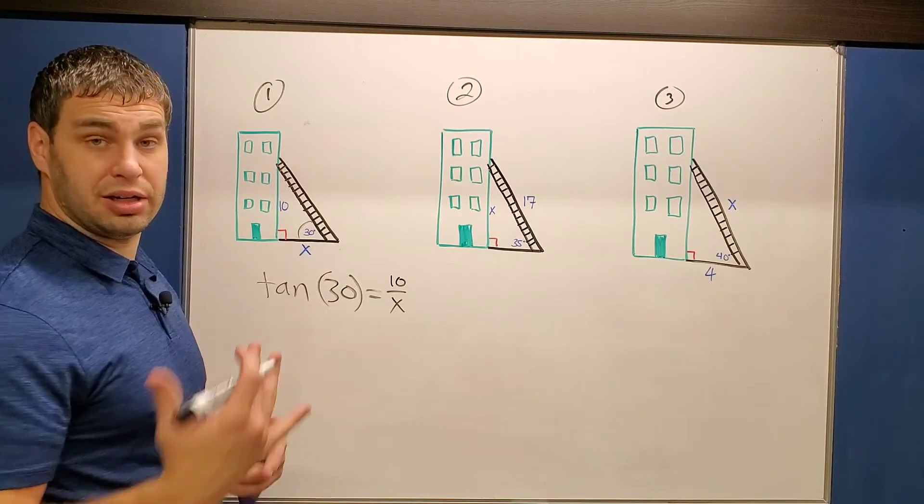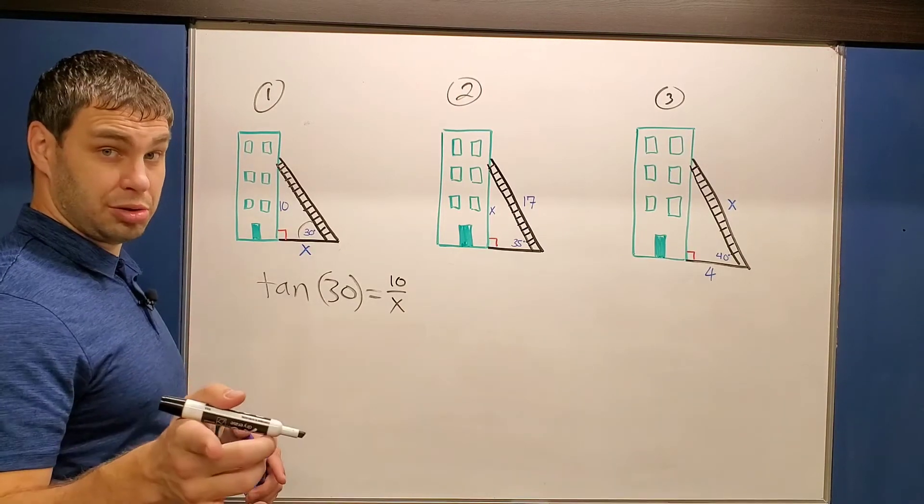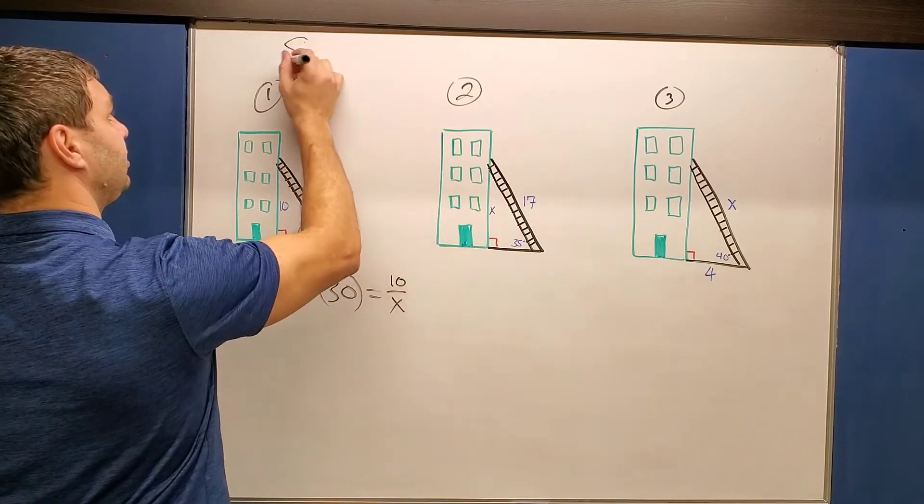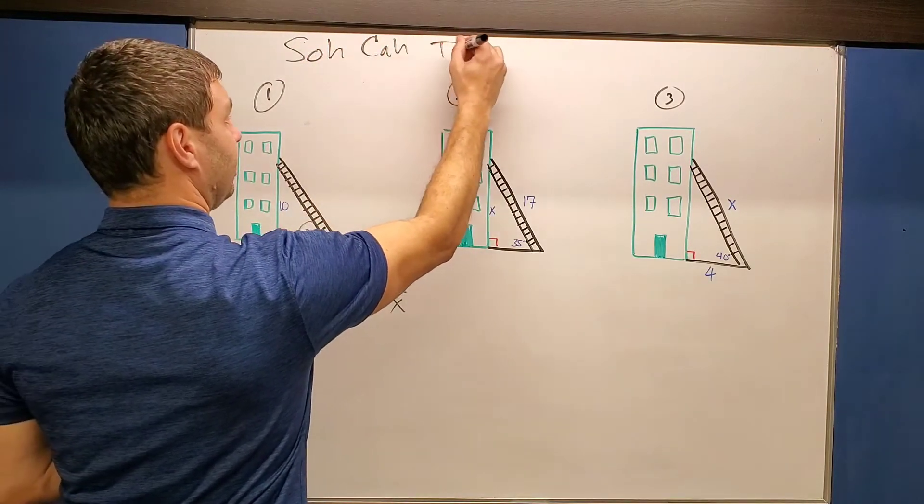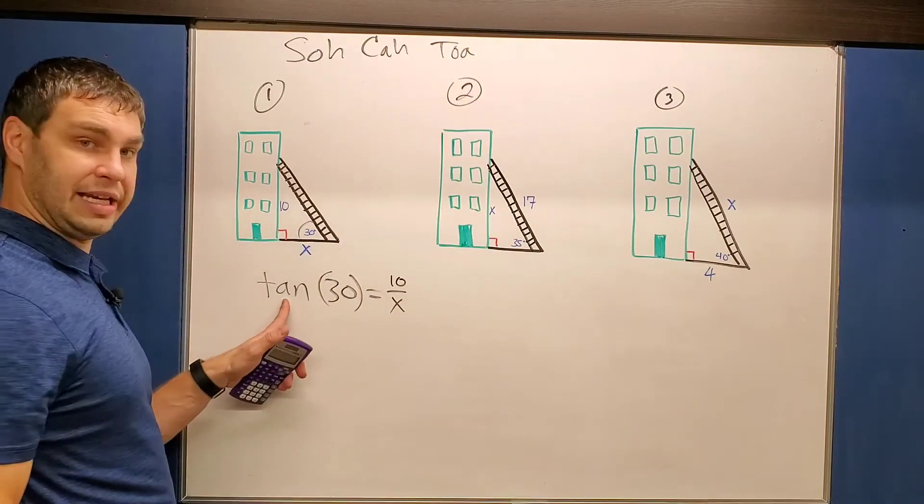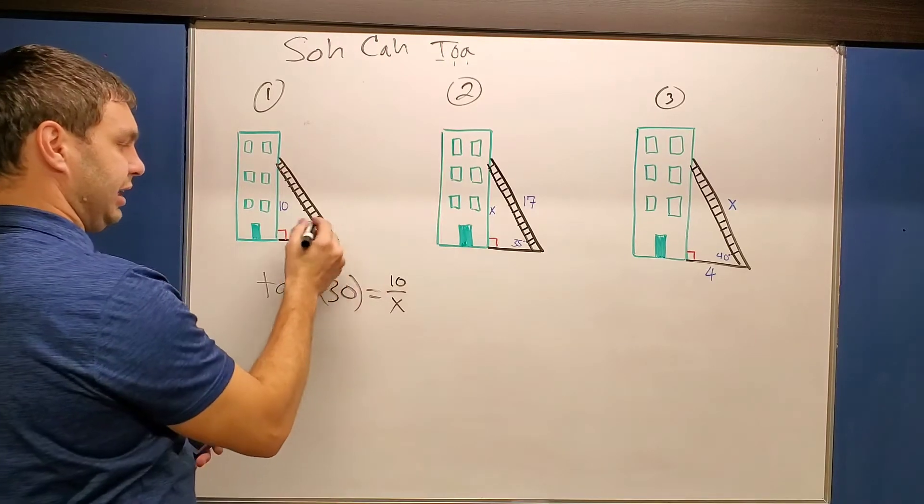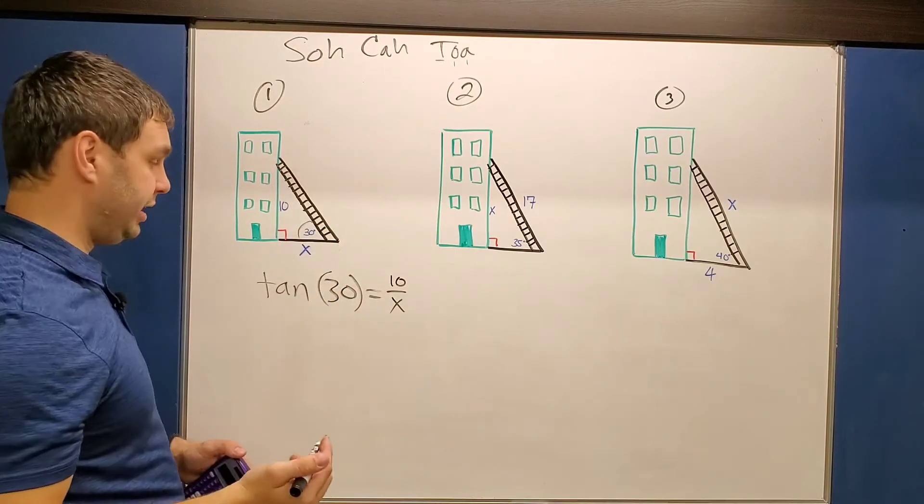By the way, if you forgot if it's sine, cosine, or tangent that you need to use, SOHCAHTOA. I have a video of that I'll put up here. Otherwise, SOHCAHTOA is what we'll use here. This one is tangent because we use the opposite and the adjacent sides compared to our 30-degree angle.